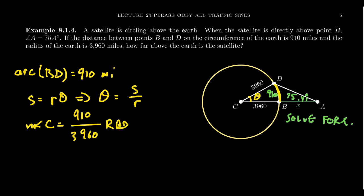Clearly, 910 and 3,960 are both divisible by 10. So let's simplify that a little bit. You get 91 over 396. Because the measure of angle A is in degrees, we have to either convert angle A into radians or we have to convert angle C into degrees. Let's just convert angle C into degrees.